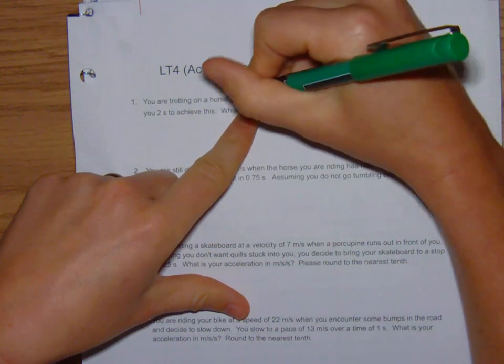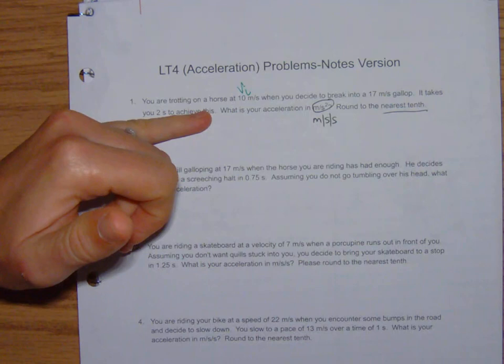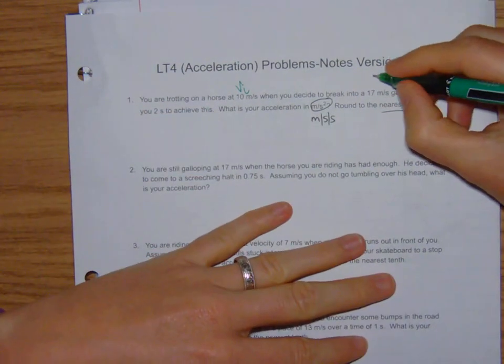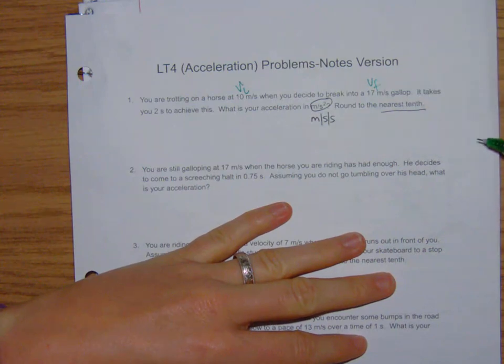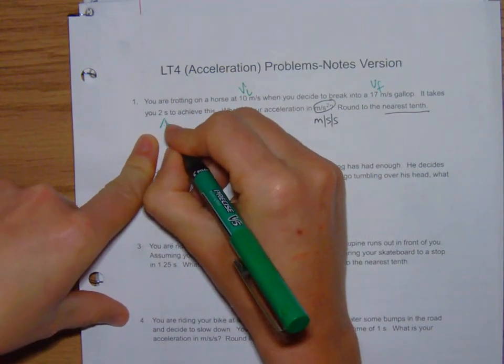So you are trotting on a horse at 10 meters per second. That's the beginning speed. So we're going to call that the VI. At the beginning of the problem you're going at 10. You decide you want to go faster. So at the end of this problem your final speed is 17. 2 seconds. That's your change in time.